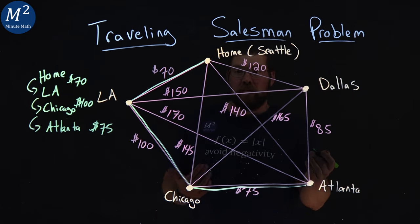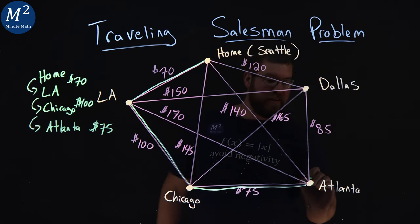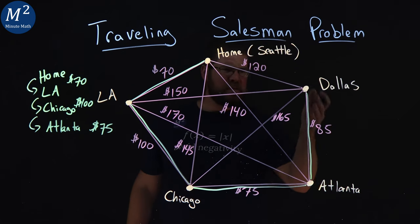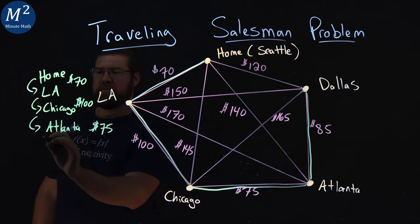Once we're in Atlanta, we need to go—well, we've one city left, so it's Dallas. And we're kind of lucking out here, and it's by design. That is pretty cheap, $85, to get to Dallas.